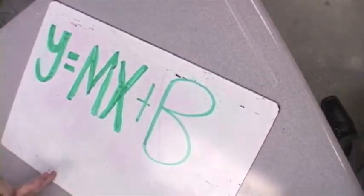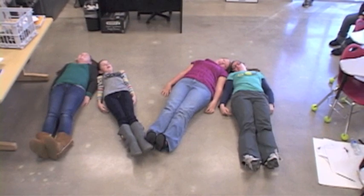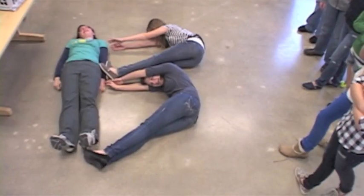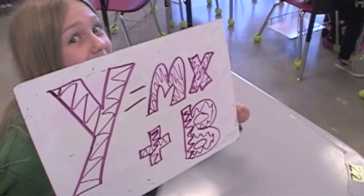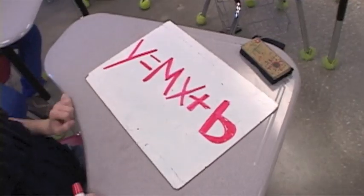Oh, sometimes graph a linear equation. Yeah. y equals mx plus b — m is the slope, b is the y-intercept. Oh yeah, graph a linear equation, yeah. Oh, sometimes graph a linear equation, yeah. y equals mx plus b — m is the slope, b is the y-intercept. Oh yeah.